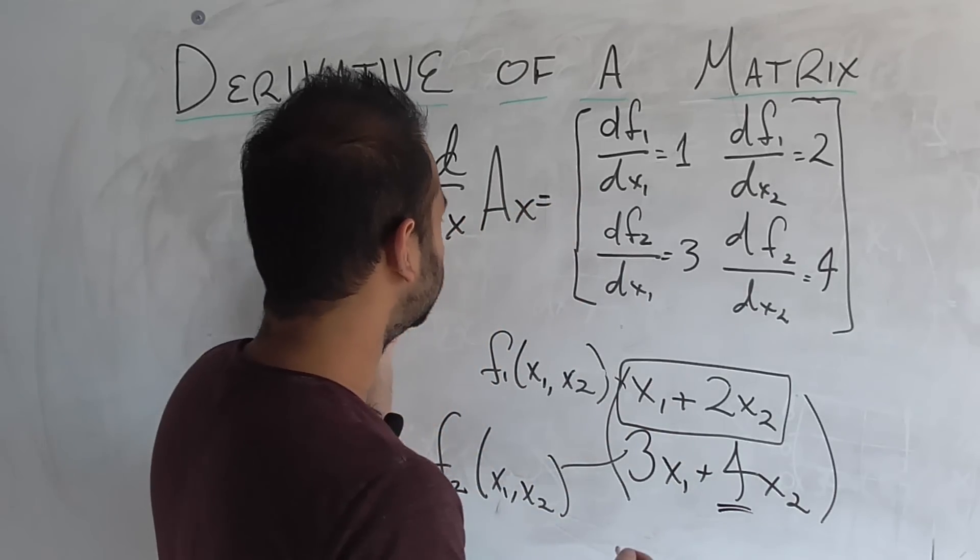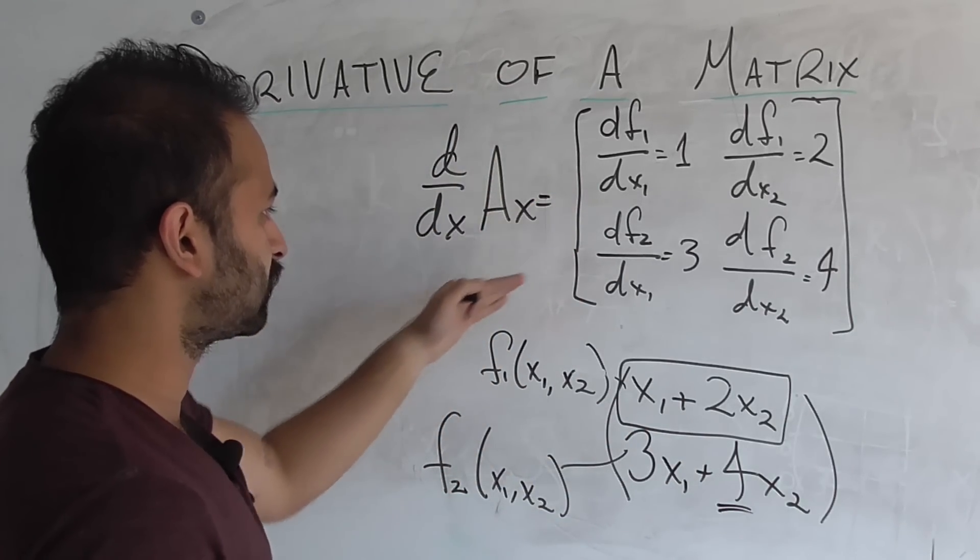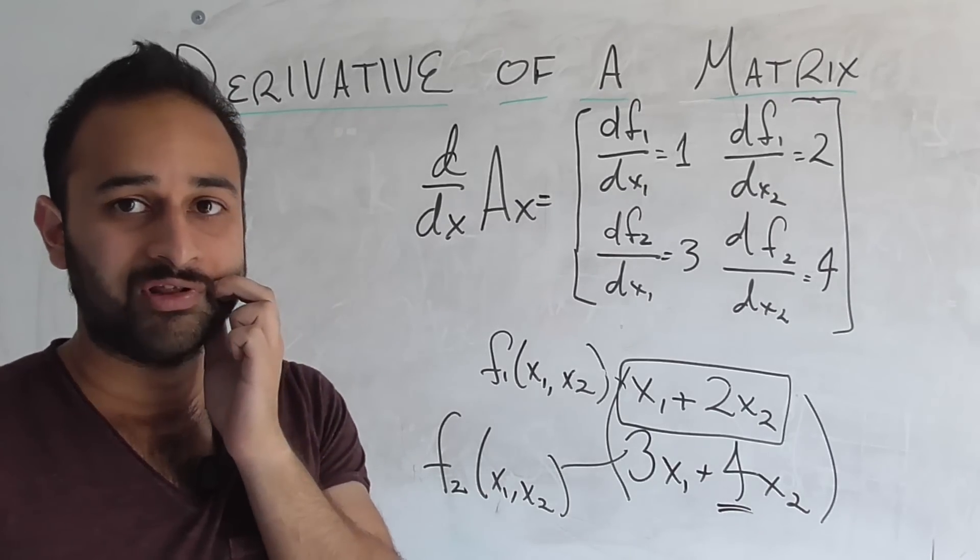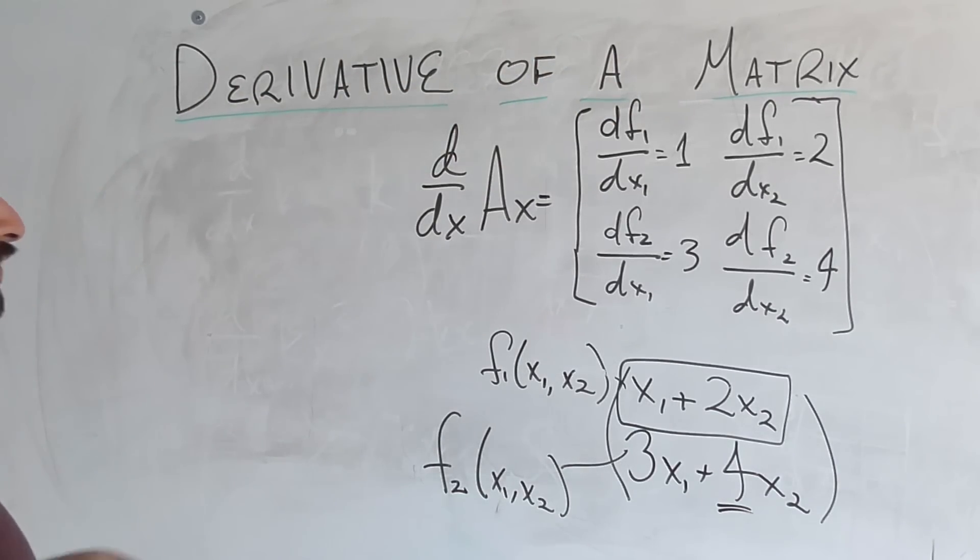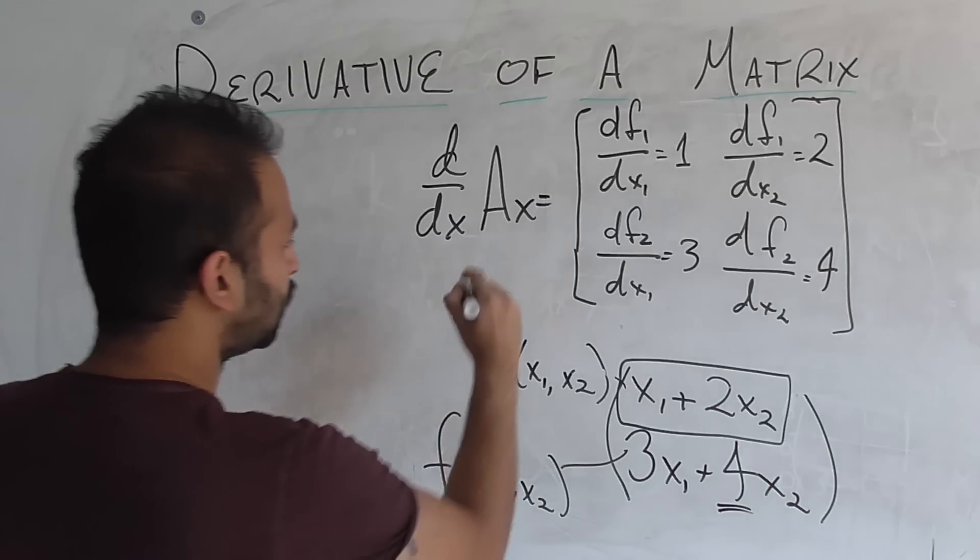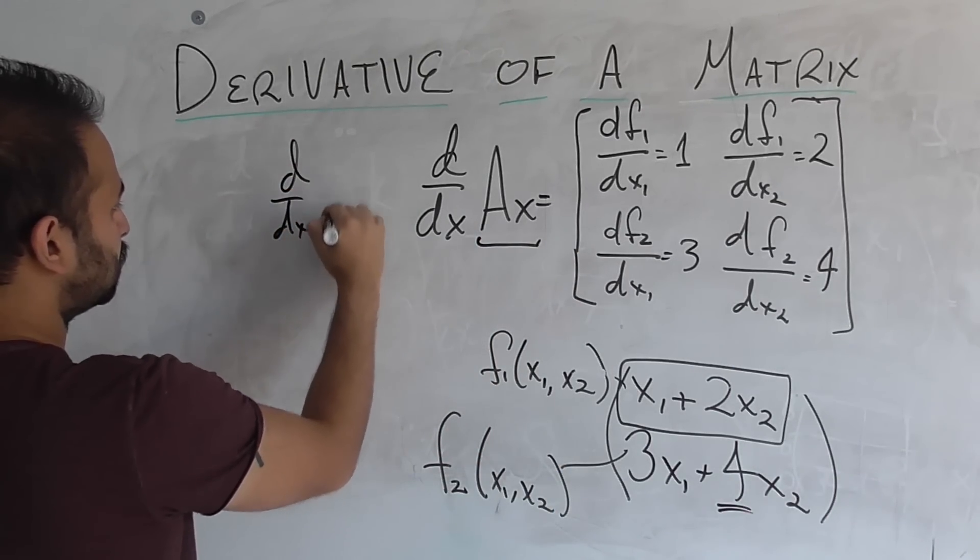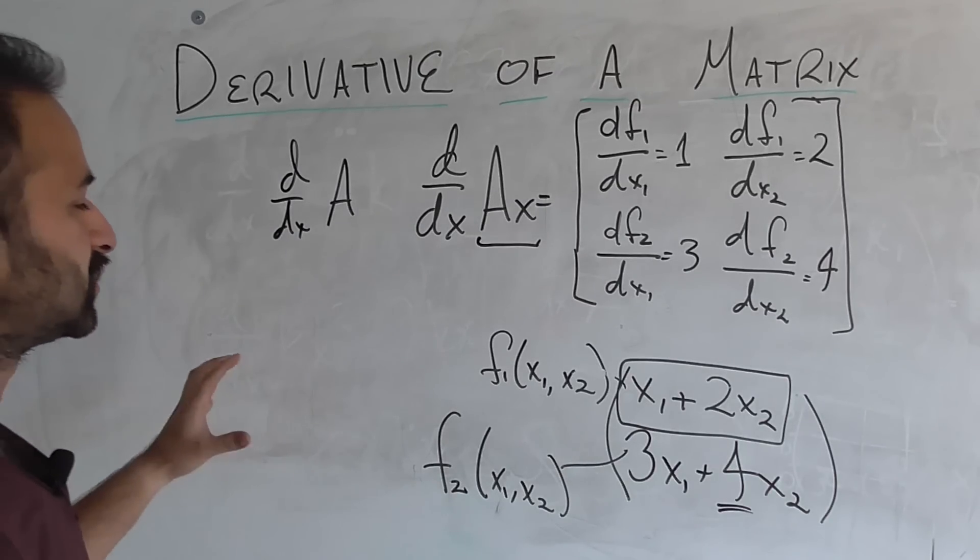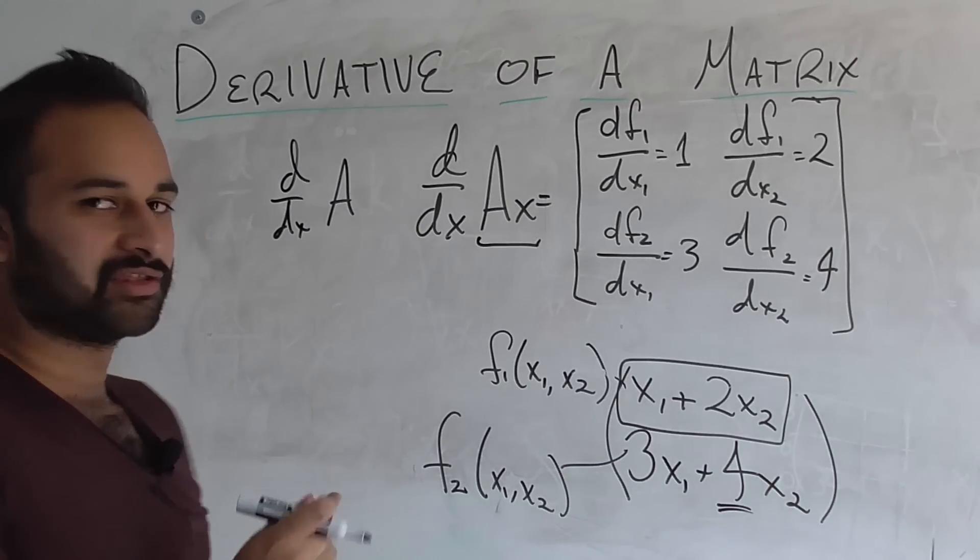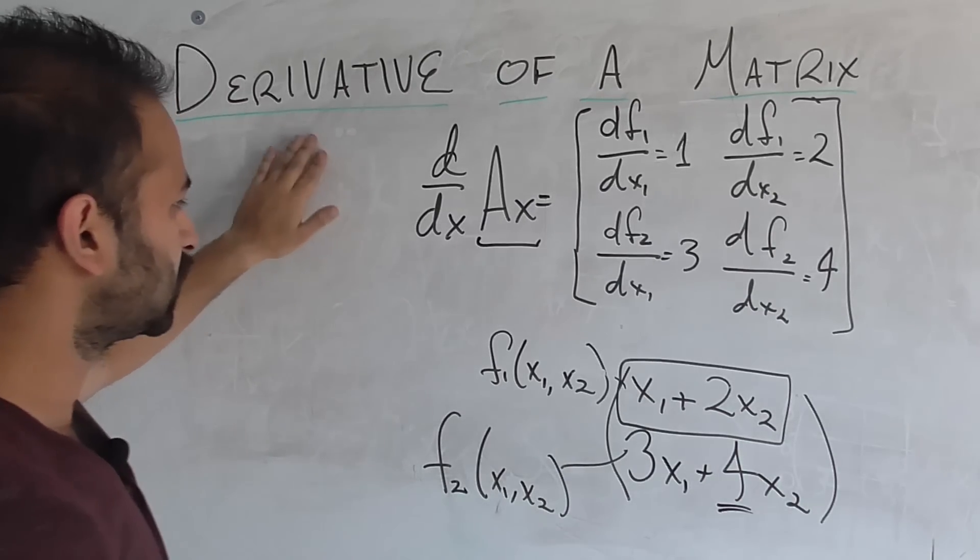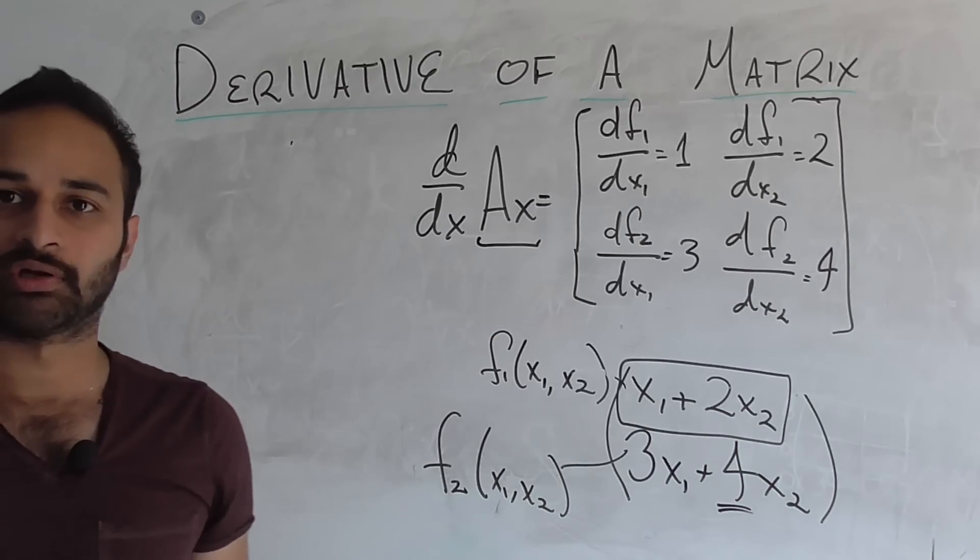So we get that the derivative of this linear transformation, A times x. So here's where I want to say that we're not really taking the derivative of a matrix. We're taking the derivative of this linear transformation, A times x. For example, taking the derivative of a matrix doesn't really make any sense, because it's not a linear transformation. That's kind of like taking the derivative of a constant, which would be 0.